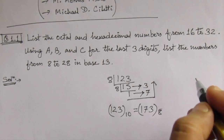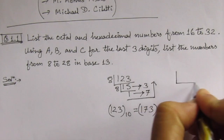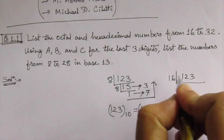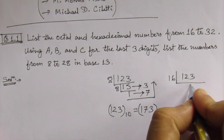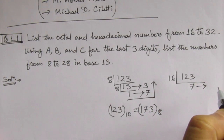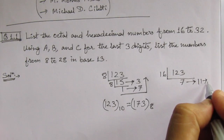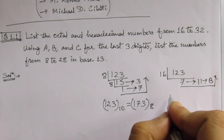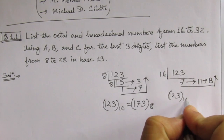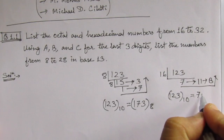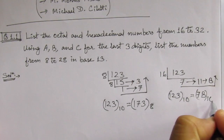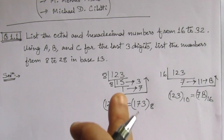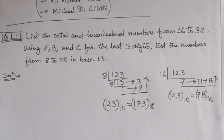Now, let us see how to find out the hexadecimal number. For finding the hexadecimal number, we have 123. We have to divide it by 16. We get 7 and the remainder is 11. Since 10 is A and 11 is B, we write it as 7B. So, 123 in decimal equals 7B in hexadecimal. In this way, we have to find out the hexadecimal and the octal numbers.